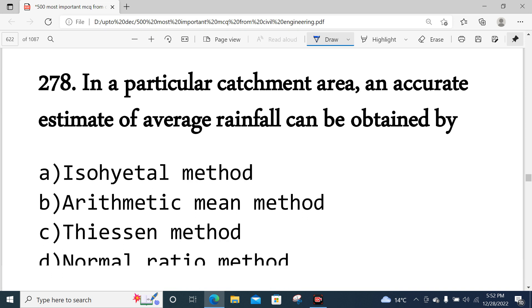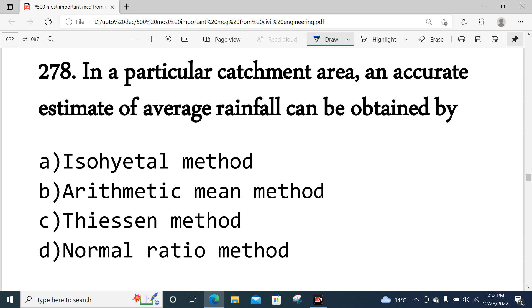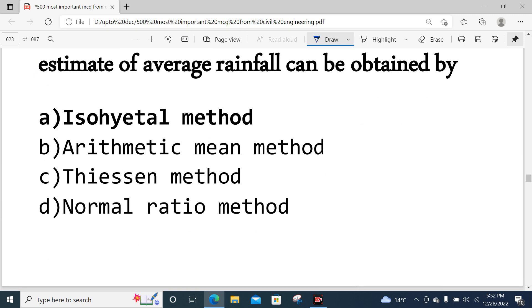Question number 278: In a particular catchment area, an accurate estimate of average rainfall can be obtained by Isohyetal method, Arithmetic mean method, Thiessen method, and Normal ratio method. Isohyetal method is used for an accurate estimate of average rainfall. Option A is correct.